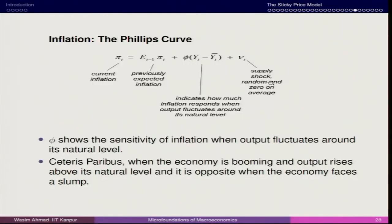Vt is the supply-side shock random variable, similar to the aggregate demand shock εt. The coefficient φ shows the sensitivity of inflation with respect to output around the natural level. When the economy is booming, Yt > Yt-bar, meaning output rises above the natural level — this gives higher inflation and the central bank will react accordingly. When Yt < Yt-bar, there is a slowdown — a favorable scenario for lowering the interest rate — and the central bank will consider reducing rates. The output gap is therefore very important.